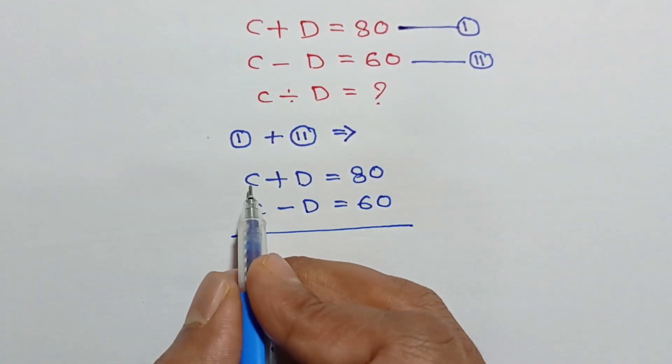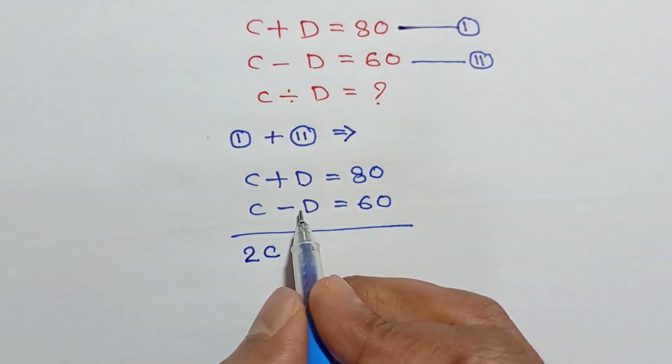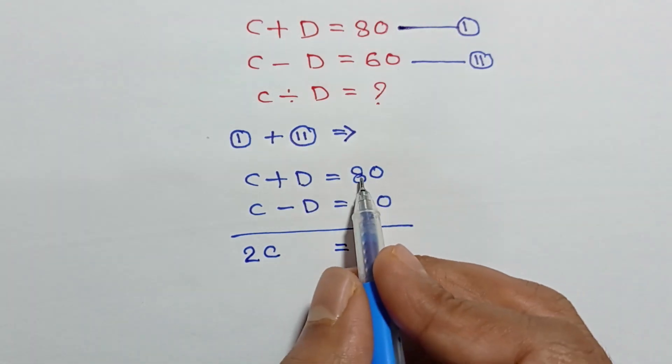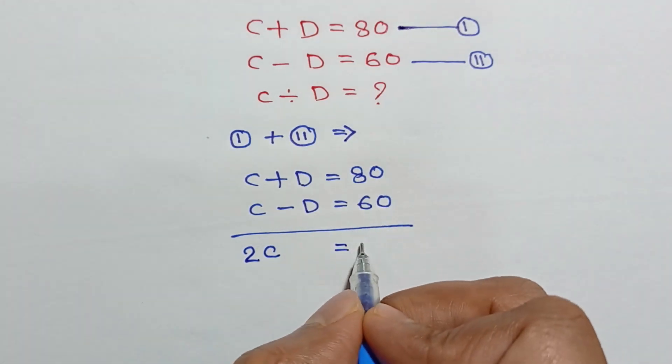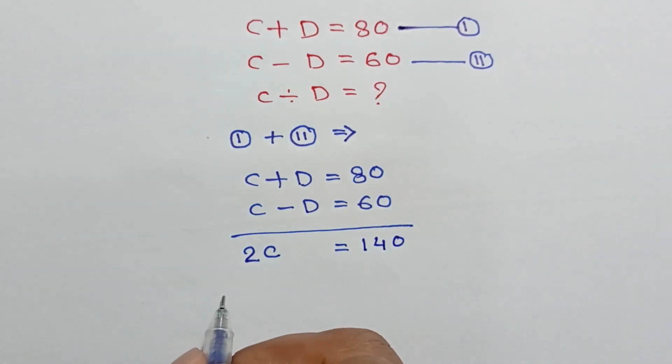Now C plus C is equal to twice C, and plus D minus D will cancel out. This is equal to 80 plus 60, which is equal to 140.